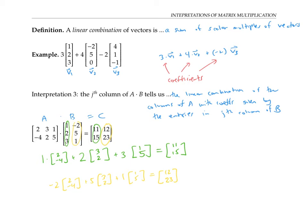It makes sense that this works, because each column of C comes from multiplying A times the corresponding column of B. When we multiply a matrix A by a column, we're doing a bunch of dot products — but each dot product is the same as taking a linear combination of entries of A where the coefficients are given by the column of B. So we're taking a linear combination of each column and placing it into the result column.